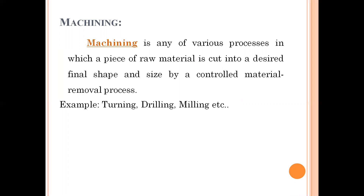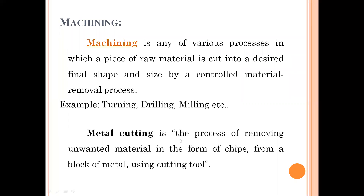Now coming to metal cutting: metal cutting is the process of removing unwanted material in the form of chips from a block of metal using a cutting tool. If you remove material in the form of chips from the base material, that is called metal cutting.